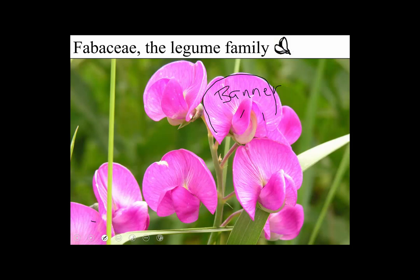The number of petals in the Fabaceae, which is a typical dicot number, is five. So: one banner, two on the side called wings. There are two left, and they are actually slightly fused together — fused at their tips — and they form what's called a keel. That area there is called a keel, and that's where the boat thing comes in. I think of a boat with a keel, the sail with the banner, and the two things on the side like oars.